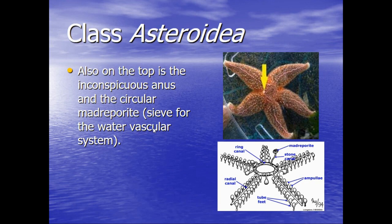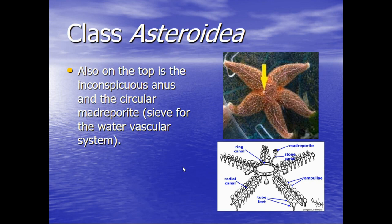Also at the top is the inconspicuous anus and the circular madriporite. The anus is on top of its body, which makes sense — when it does eliminate waste, it's eliminated from up here, which is easier than if it's down underneath, and besides, its mouth is down there. The madriporite is the sieve for the water vascular system. This is how water gets into its body and allows it to move — they move by using water pressure. This little spot right there is just a diagram of the water vascular system; this is the intake valve, which is how water is drawn into the whole system.